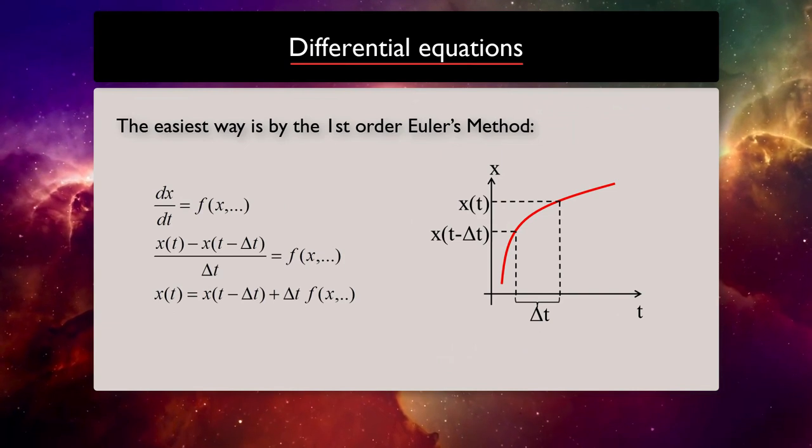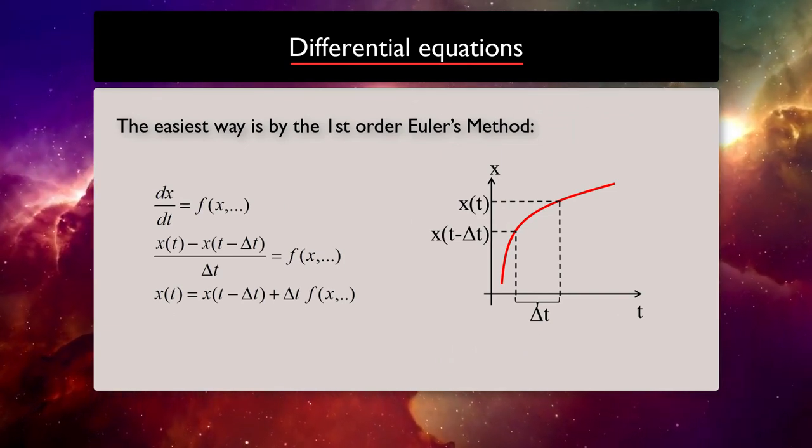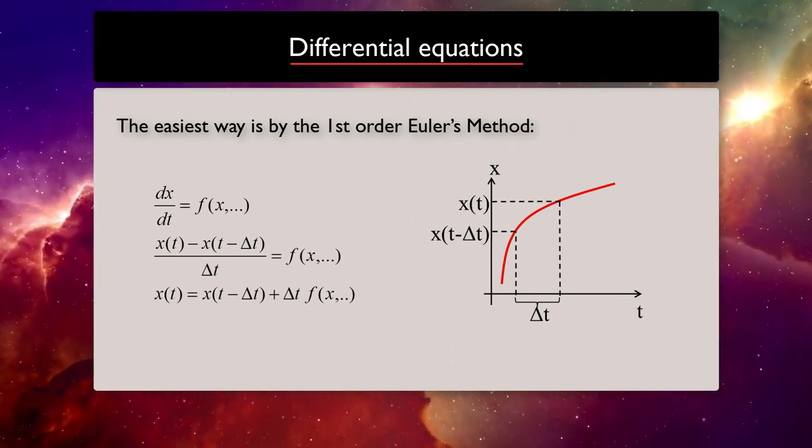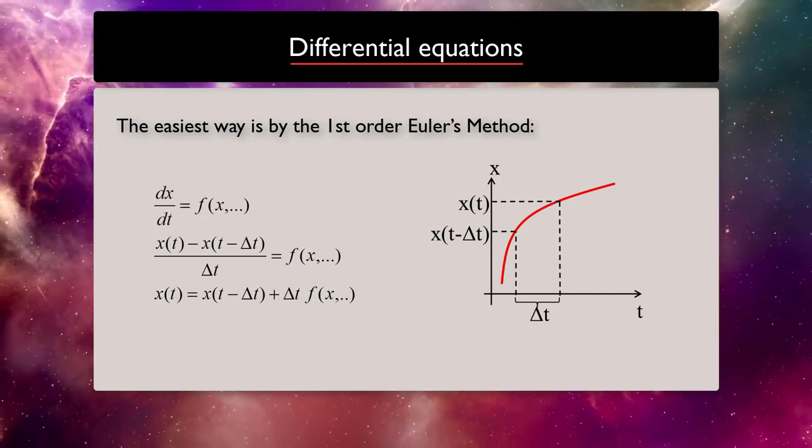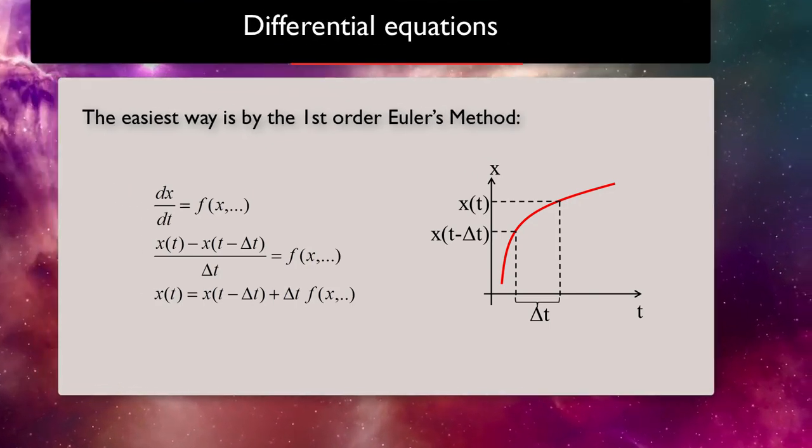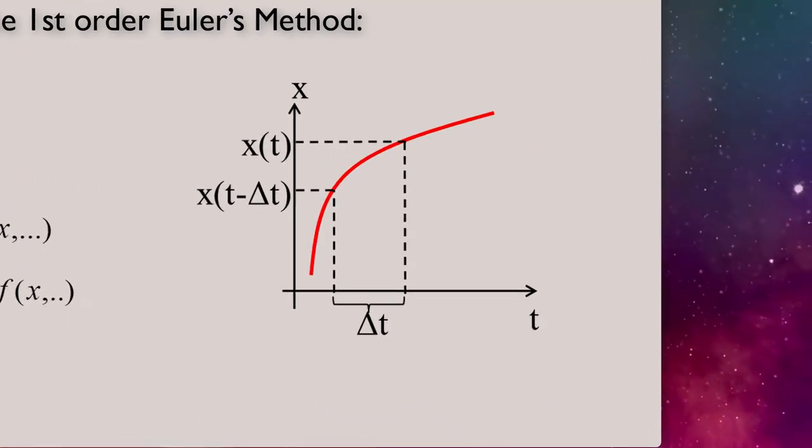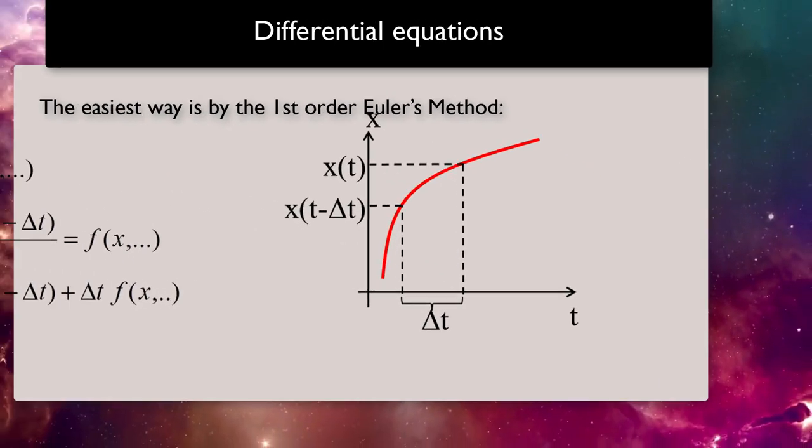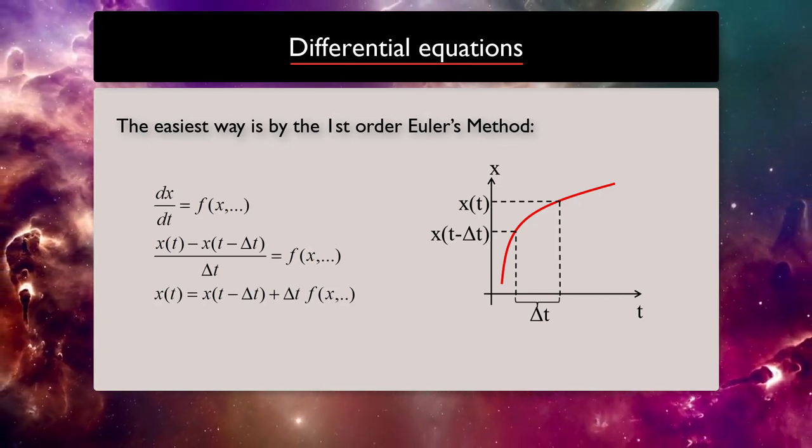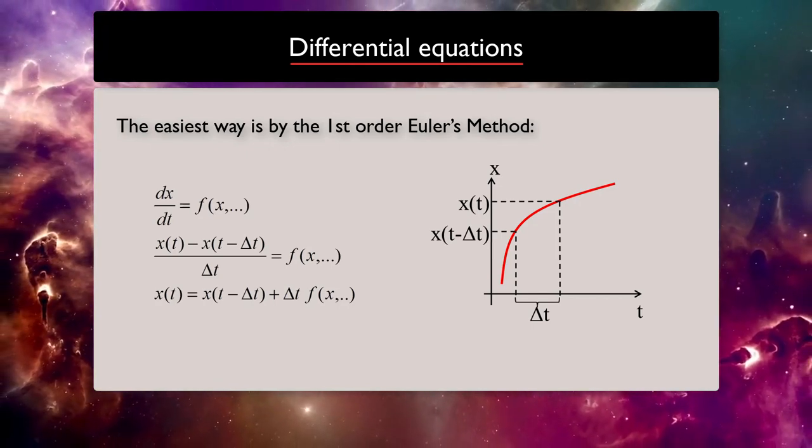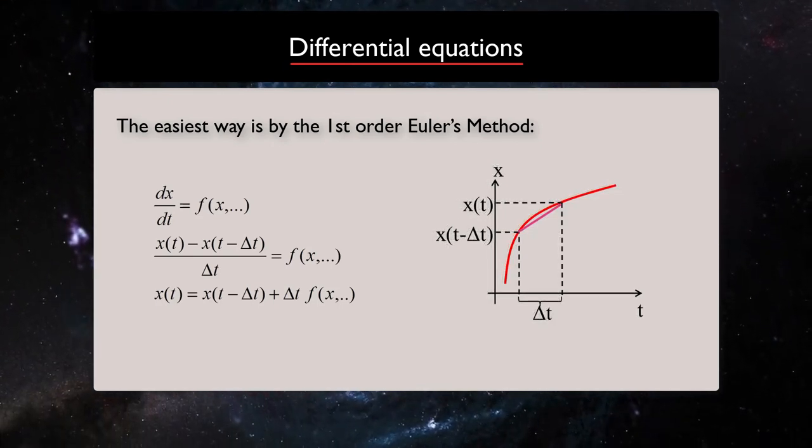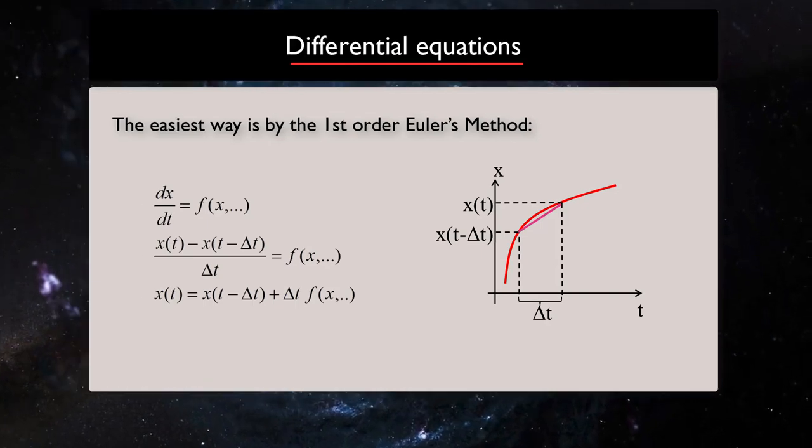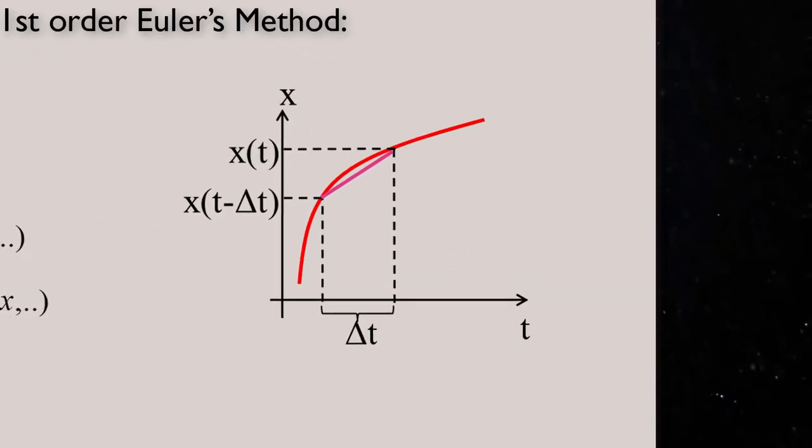The easiest way to solve a system of differential equations numerically is by using the first-order Euler method, which uses the idea of local linearity or linear approximation where we use small tangent lines over a short distance to approximate the solution to an initial value problem. If we zoom in small enough, every curve looks like a straight line, and therefore the tangent line is a great way for us to calculate what is happening over a period.